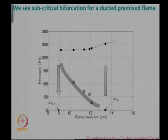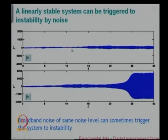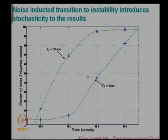Two of them are others' experiments. This is our own experiment — unfortunately the audio is not playing. This is like a noisy system — the noise stays as it is, but at some point the noise suddenly goes to instability. In fact, if you do the experiment with different levels of noise — for example, at a certain level of noise you do the experiment 100 times, 70 times it triggers and 30 times it does not. So now you talk about probability, because noise is stochastic.